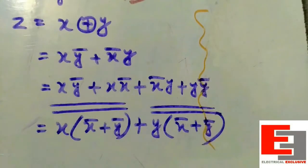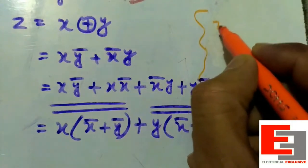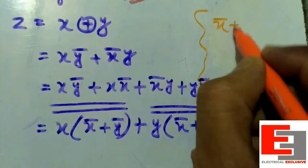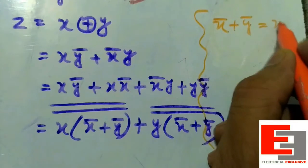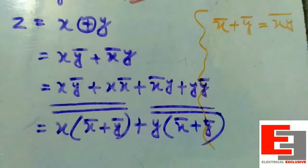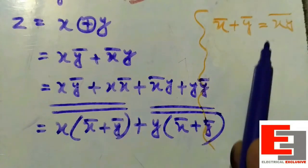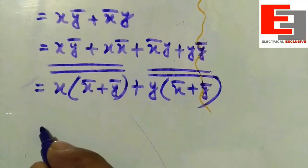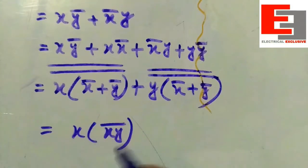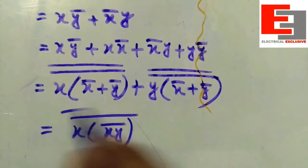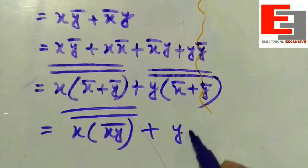Before we proceed we need to learn one more important formula in Boolean algebra: X̅ plus Y̅ is equal to (X into Y) whole bar. So instead of X̅ + Y̅ we can write (XY)̅. Applying this, we get X into (XY)̅ plus Y into (XY)̅.